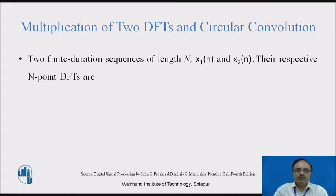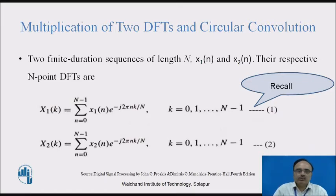Now let us see: if x1(n) and x2(n) are two finite duration sequences of length N, their respective N-point DFTs can be shown. We recall that the definition of the discrete Fourier transform is given as a summation from n=0 to N−1 of x(n) e raised to −j2πnk/N, where omega has been sampled at 2π/N multiplied by k, where k ranges from 0 to N−1.